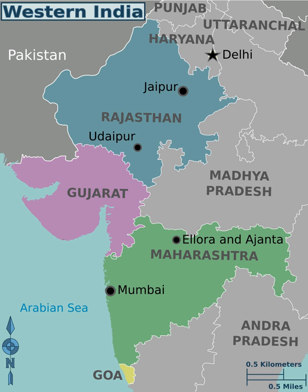The rivers in this region are the Mahi, Narmada, Tapi, Godavari, Zuari, Mandovi, Krishna, Ghaggar, Chambal, and many other smaller tributaries of other rivers.